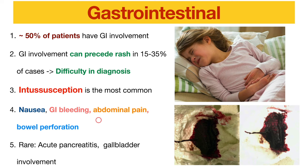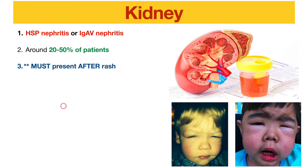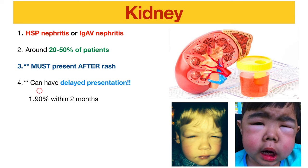Rarely, patients can present with acute pancreatitis or gallbladder involvement. For kidney presentation, we call it HSP nephritis or IgA vasculitis nephritis — it happens in around 20 to 50% of patients. It must present after the rashes. 90% of cases happen within two months after the rash, and 97% happen within six months. Therefore, any patient diagnosed with HSP needs follow-up for at least six months, monitoring blood pressure and urine dipstick for kidney involvement.